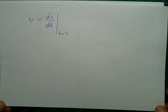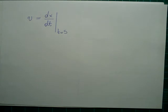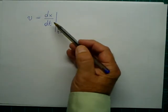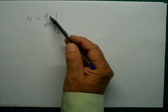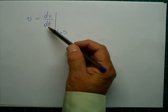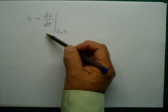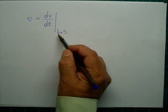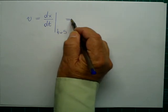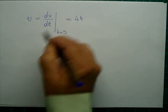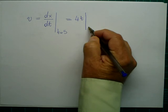Let's go to the last question. We have to find the instantaneous velocity of the jet. This is given by the first derivative of the function x with respect to t at the point t equals 5. This is 4 times t, the first derivative, at the point t equals 5.